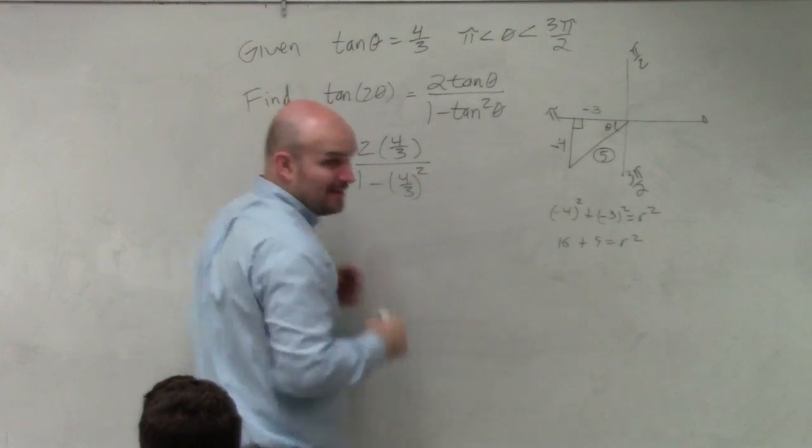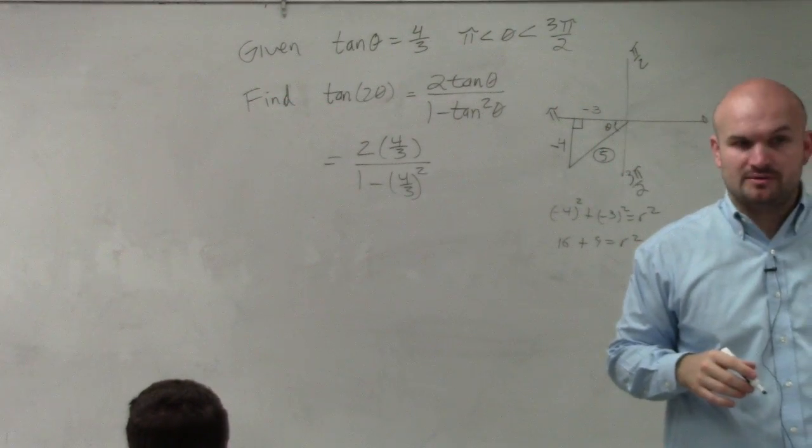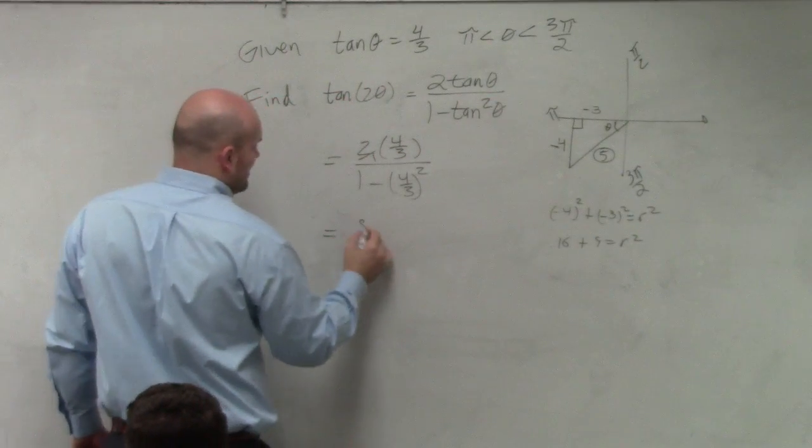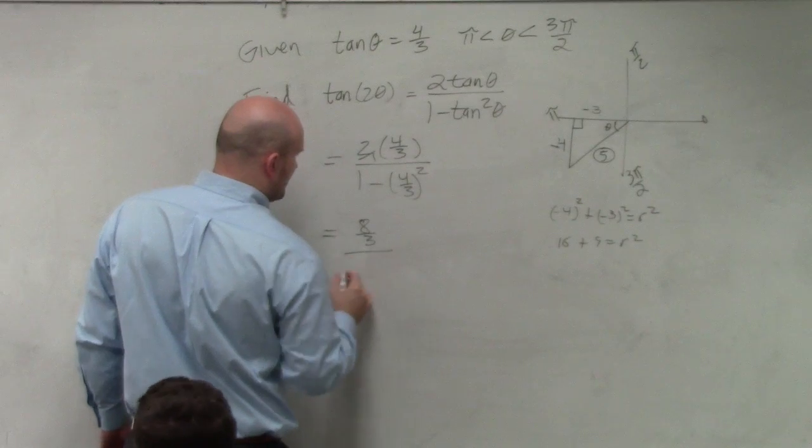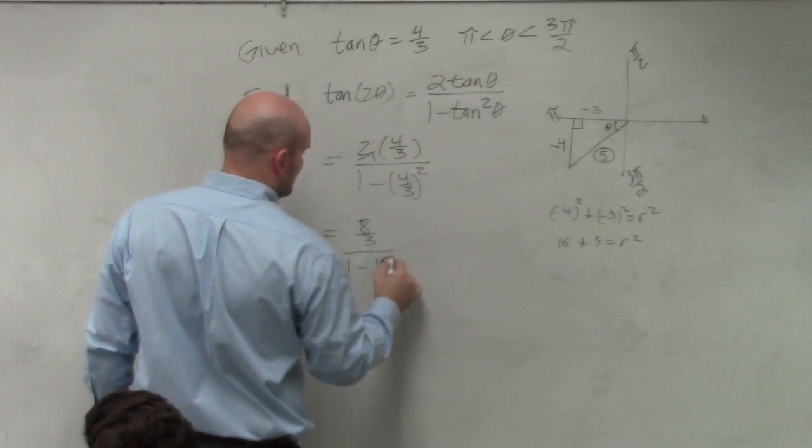Now remember, we've got to use our order of operations. And whenever we multiply a fraction times a whole number, remember this can be rewritten as 2 over 1.